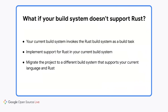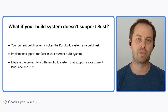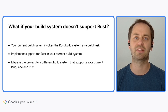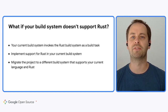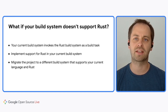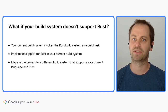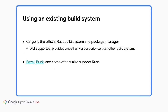The second incremental way forward is to implement Rust support for your current build system. Finally, there is an option to migrate your large project to a different build system — however, this is a huge task and will need to be done incrementally. If you were starting a new Rust-only project, you would probably choose Cargo as the build system, and it would be a nice, smooth experience. Cargo is the default build system and package manager for Rust, and it's one of the reasons why writing Rust feels so productive. There are other build systems that support Rust — for example, Bazel, Buck, Gradle, and some others.